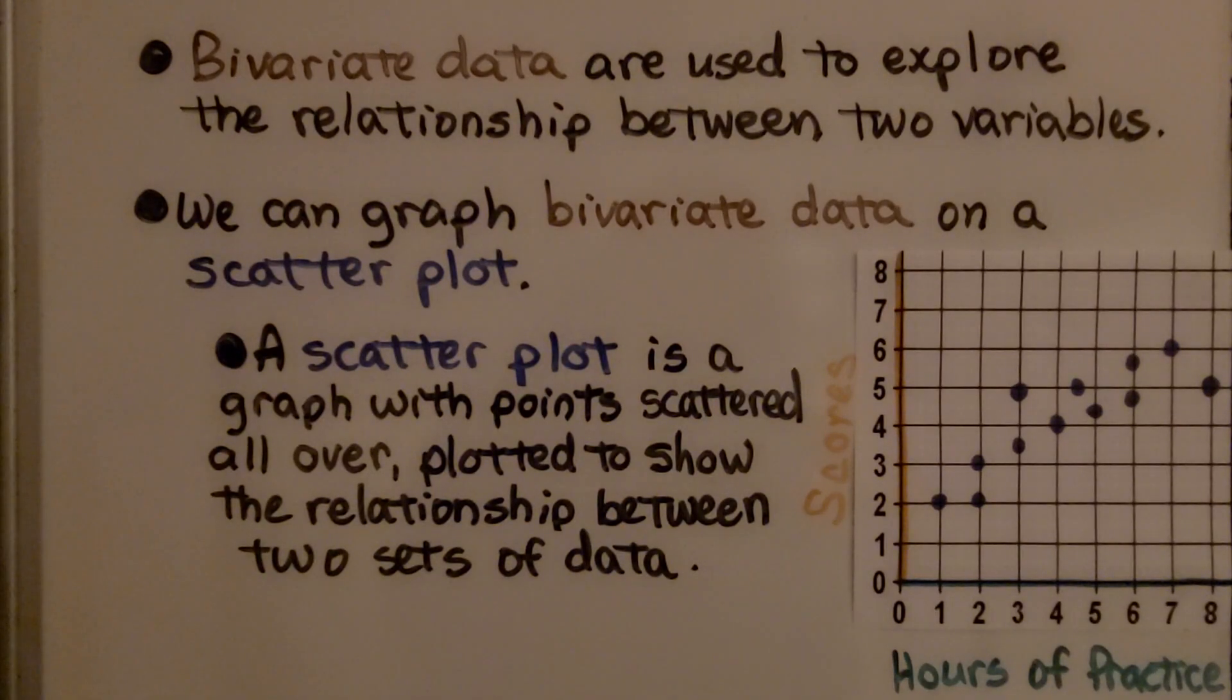Bivariate data are used to explore the relationship between two variables. We can graph bivariate data on a scatter plot. A scatter plot is a graph with points scattered all over, plotted to show the relationship between two sets of data, such as hours of practice and the scores that are earned.